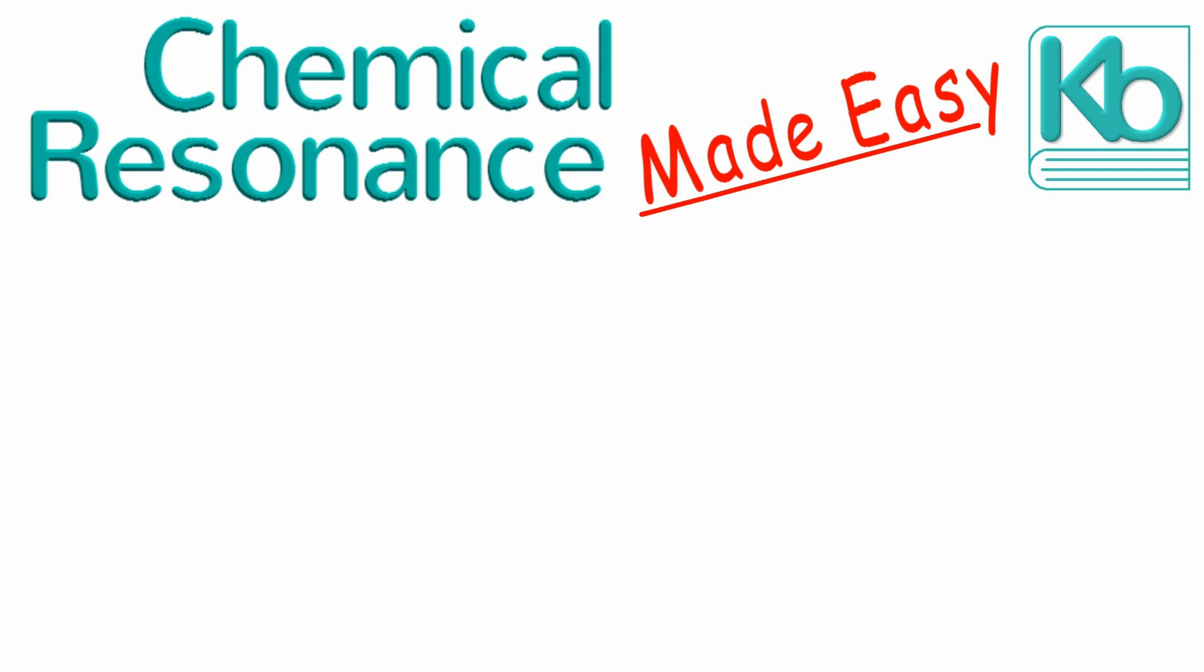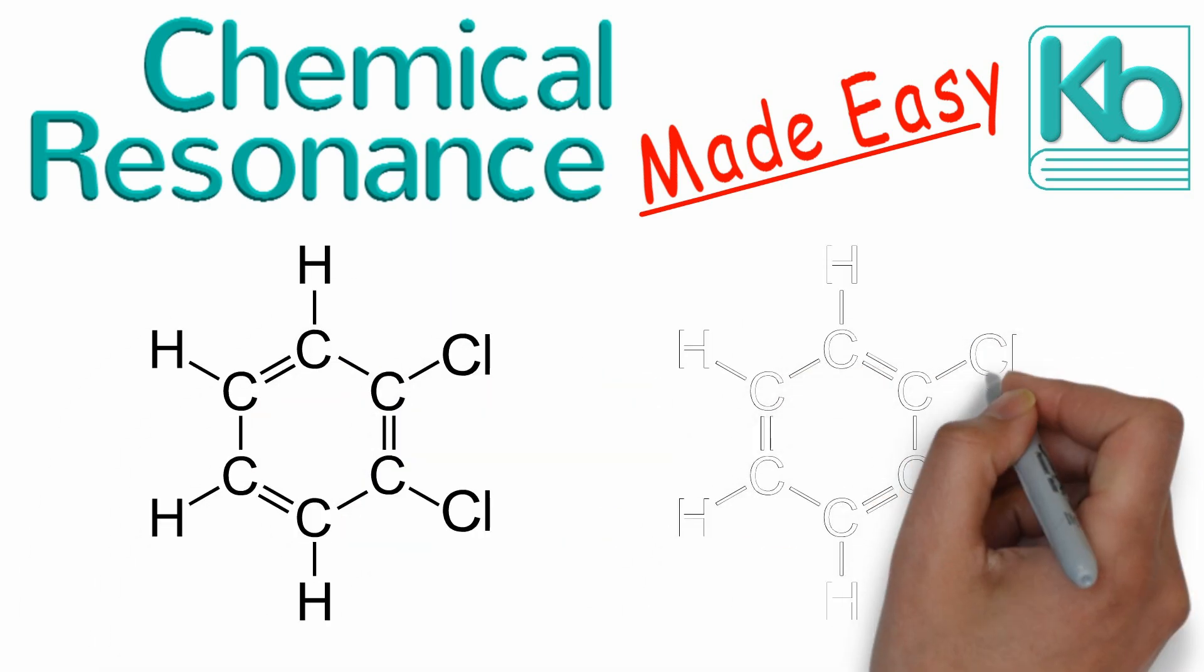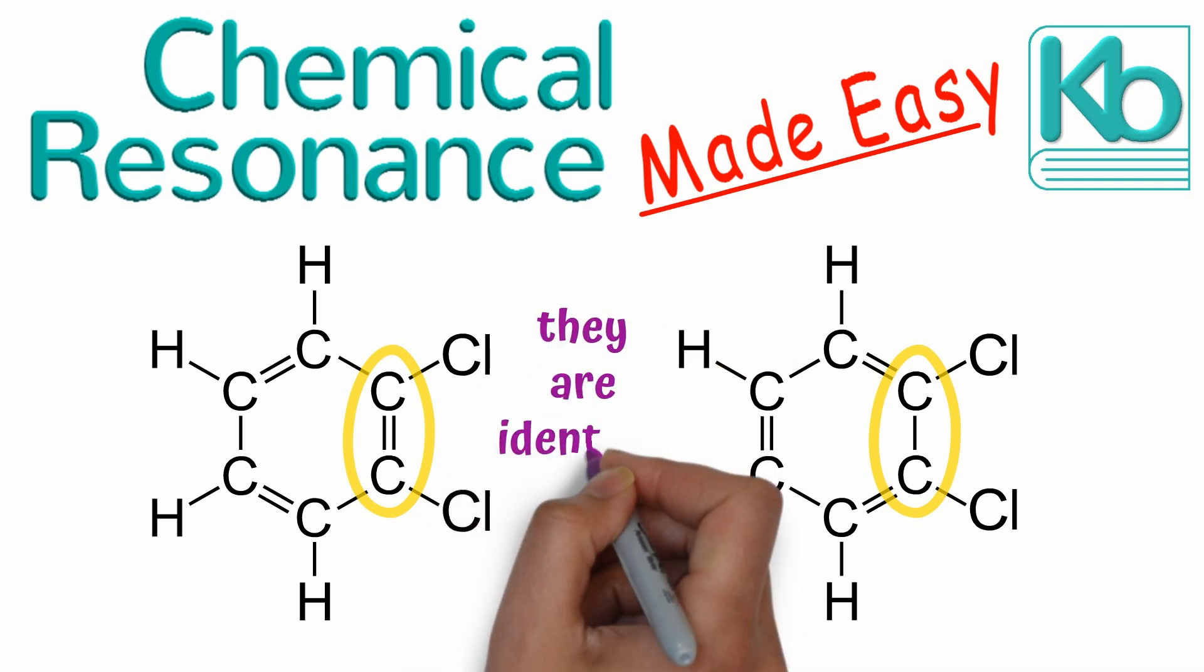The first problem with Kekule's structure has to do with the isomers of substituted benzene. Look at these two structures of 1,2-dichlorobenzene. At first they may look similar, but a closer inspection reveals that one has a double bond between the chlorinated carbons while the other has a single bond. So these should be different molecules with different properties, right? Well, actually no, they are not different molecules. They are identical.